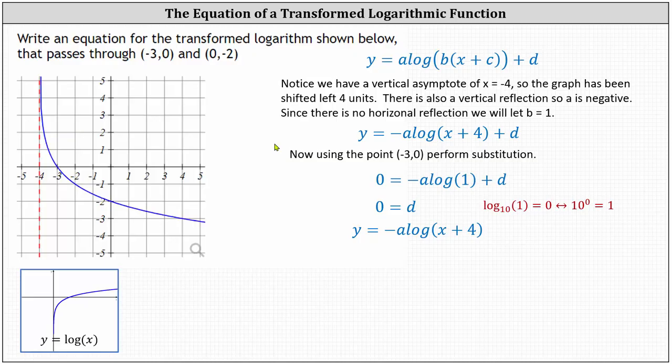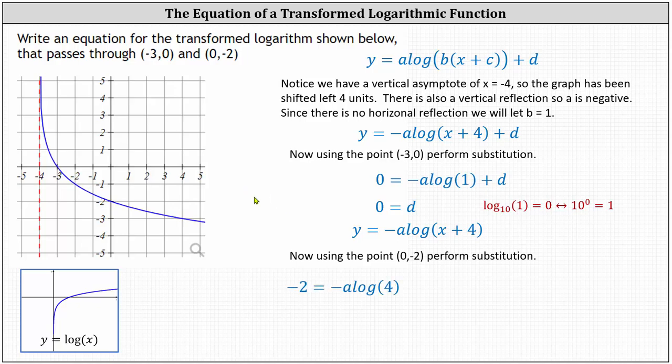Now we use the other point, zero comma negative two, and perform substitution again. Performing substitution, we have negative two equals negative a times common log four.